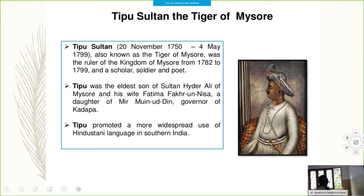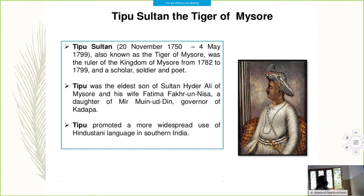Tipu Sultan, also known as the Tiger of Mysore, was the ruler of the Kingdom of Mysore from 1782 to 1799, and was a scholar, soldier, and poet. He was the eldest son of Hyder Ali and his wife Fatima. Tipu also promoted a more widespread use of the Hindustani language in southern India.